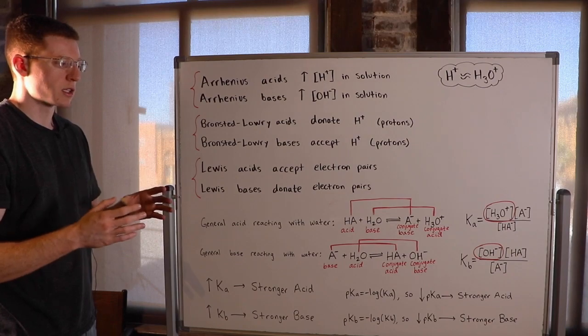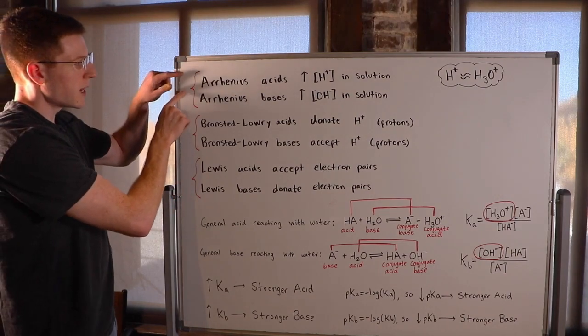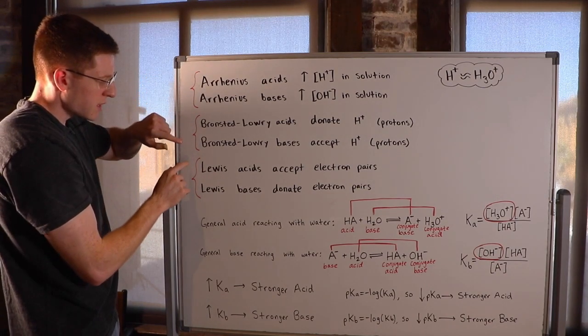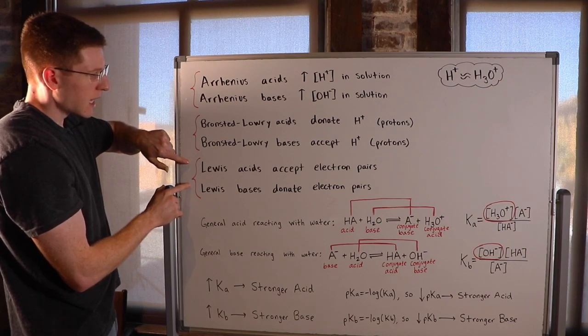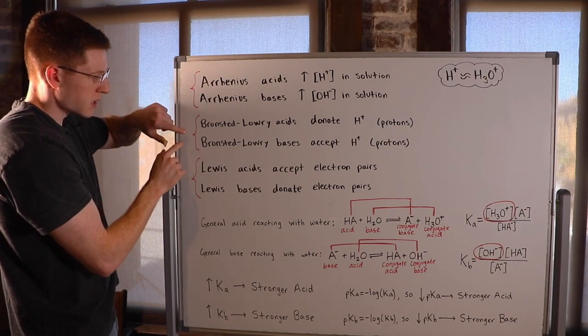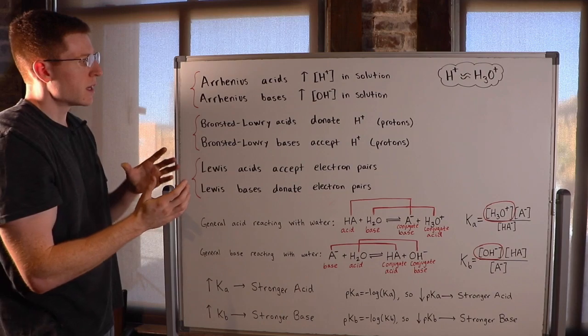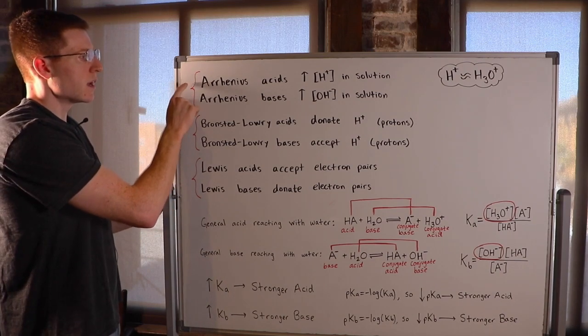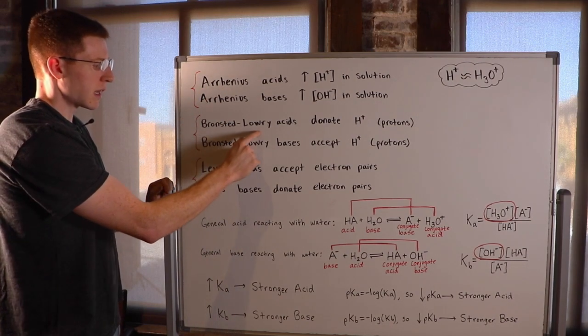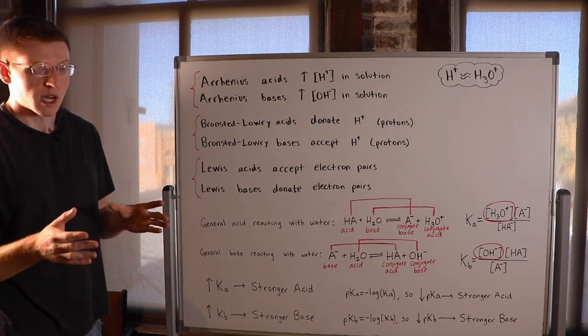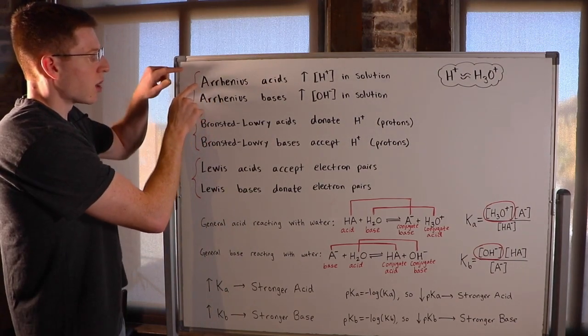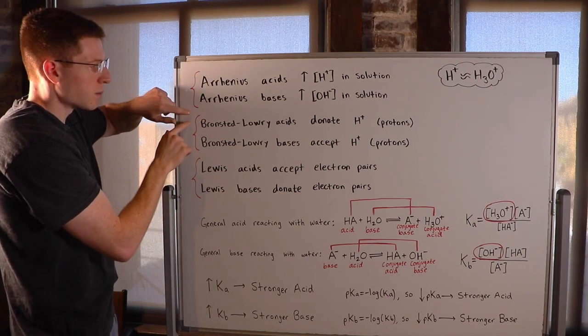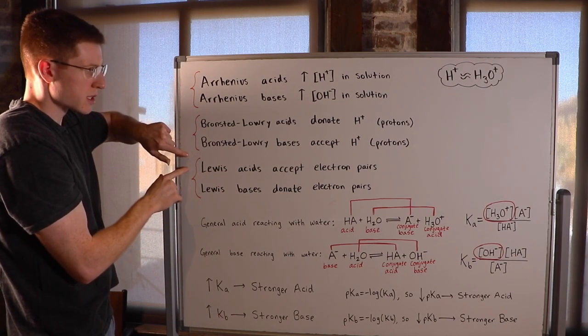So when you look at a chemical or a molecule in a reaction, you should be able to pick out what sort of activity it is doing and be able to label it as an Arrhenius, Bronsted, or Lewis acid or base. For example, something may be an Arrhenius acid, a Bronsted-Lowry acid, and a Lewis acid all at the same time. Or you may have an acid that is only an Arrhenius acid while not being a Bronsted-Lowry acid or a Lewis acid.